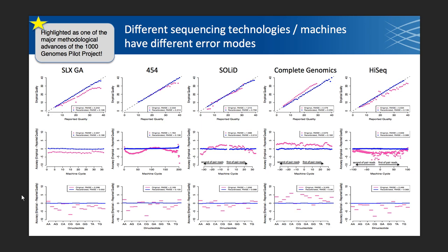For the middle row, we have machine cycle — this is the order in which the bases are read off the read. The first base is the first cycle, the second base is the second cycle, and so on through the length of your read. For paired reads, you have your first of pair and your second of pair reads. You want to indicate that because typically the second read on the other end of the fragment will be of lower quality overall. On the y-axis we are plotting the difference in empirical versus reported quality, and you can see these different samples from the different sequencing platforms have different patterns of bias.